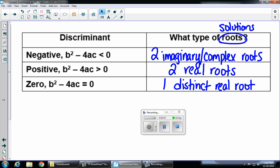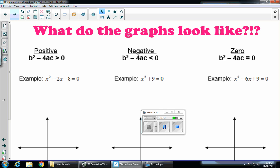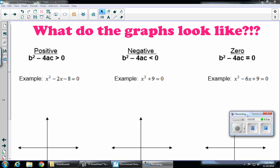So, let's take a look at their graphs. So I have three examples here for you. So let's start with our positive. X squared minus 2x minus 8 equals zero. So first, let's just show that it's definitely a positive number.